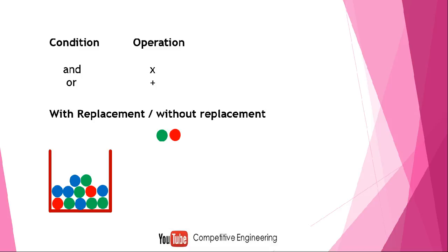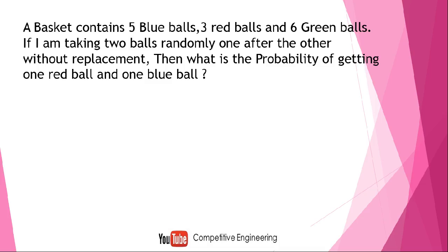In some questions it will be mentioned whether it is with replacement or without replacement. But if it is not mentioned, you should assume it is without replacement. If it is with replacement, it will be clearly stated in the question. Now let's deal with a question: a basket contains 5 blue balls, 3 red balls, and 6 green balls — 14 balls total.